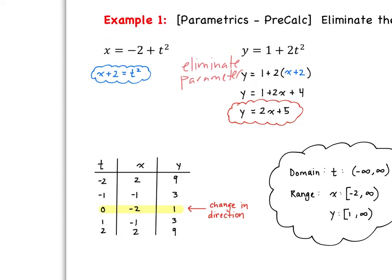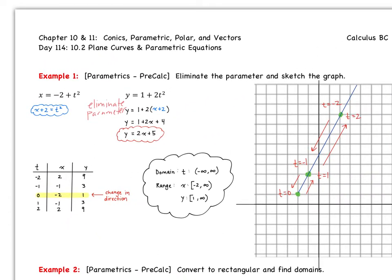So what does that look like graphically? We start by plotting this table. At t = negative 2, we're at the point (2, 9). When t = negative 1, we're at (negative 1, 3), so you can see our graph is going in this direction. When t = 0, we're at (negative 2, 1). When t = 1 we're back at (negative 1, 3), and when t = 2, we're at (2, 9). So at t = 0, that's our change in direction — we're going back up this way.